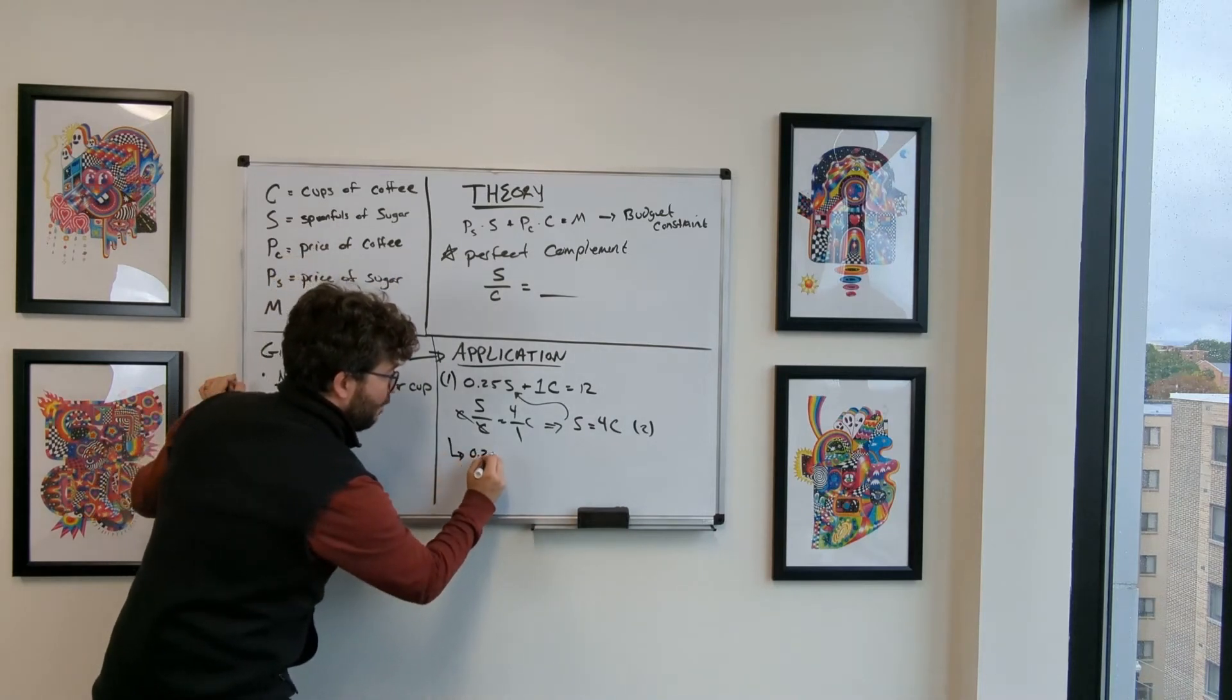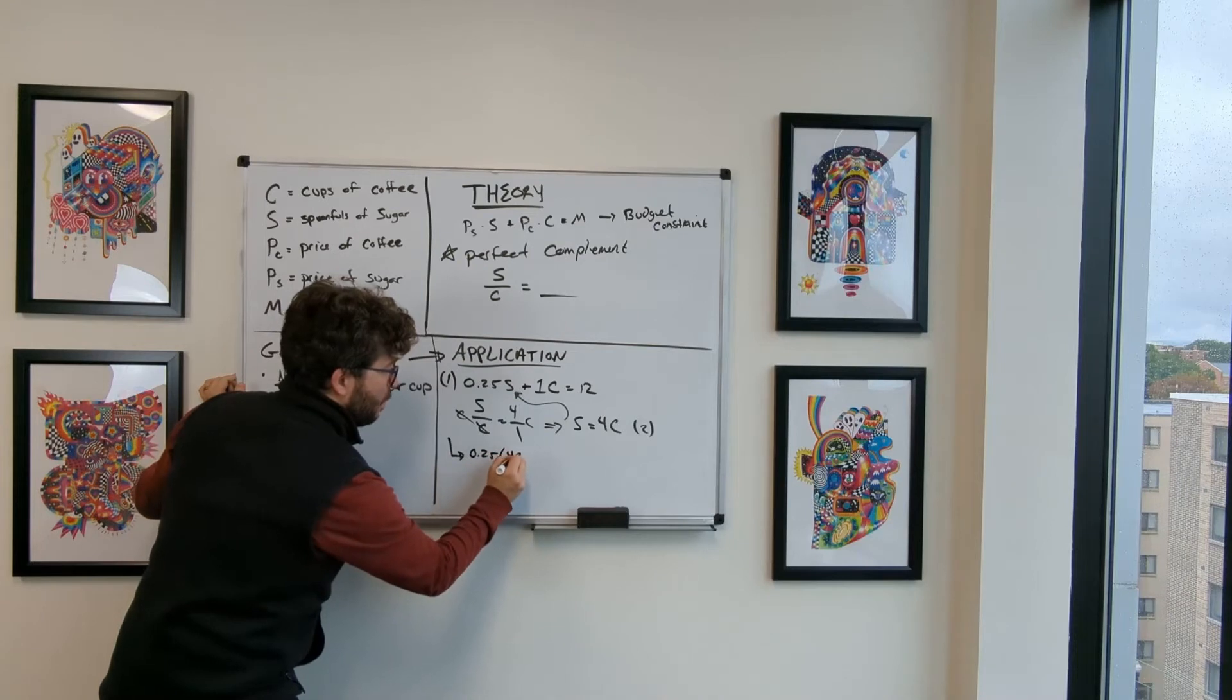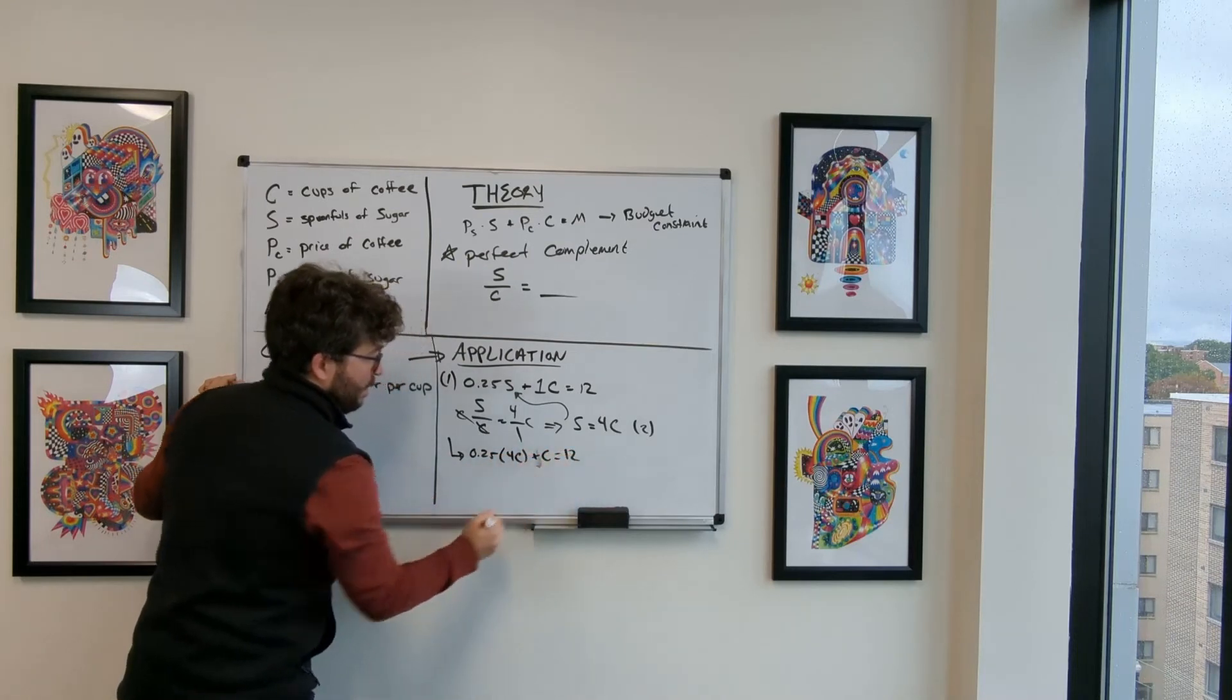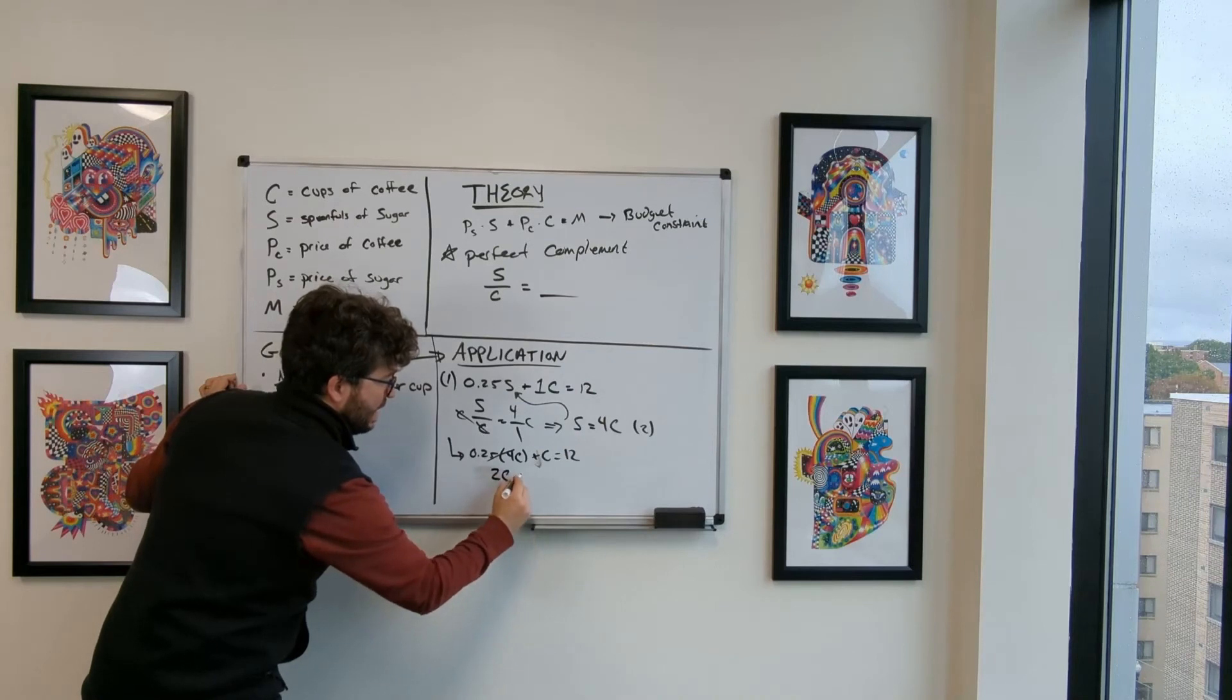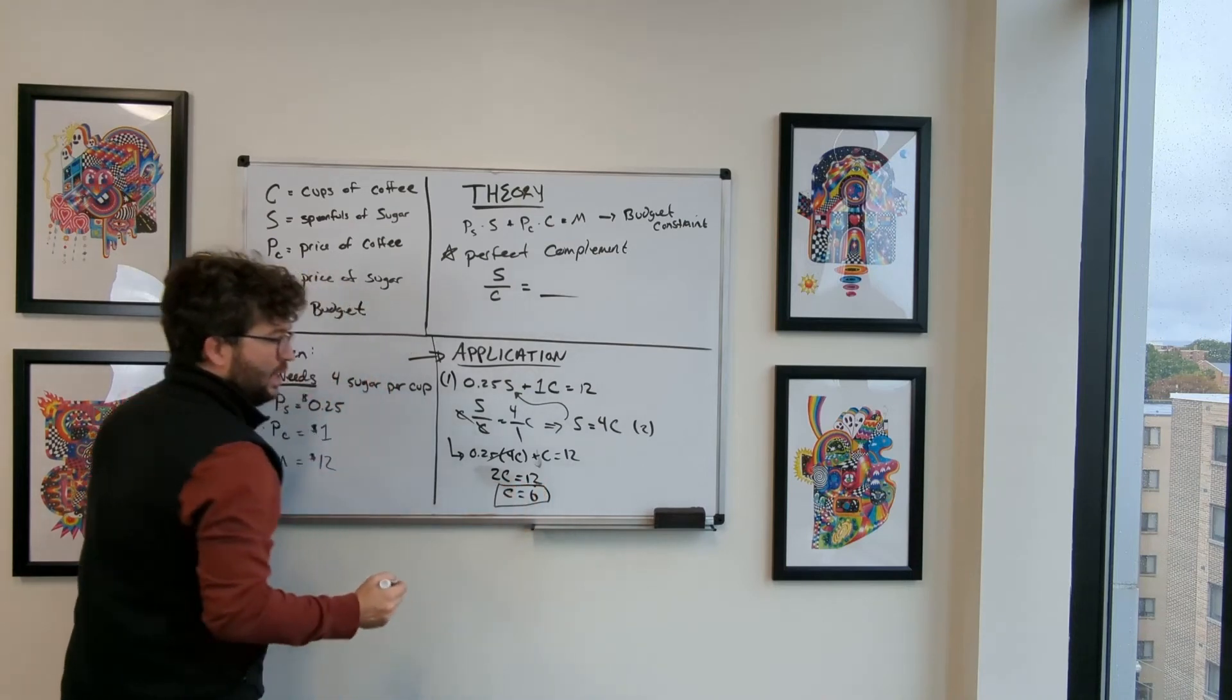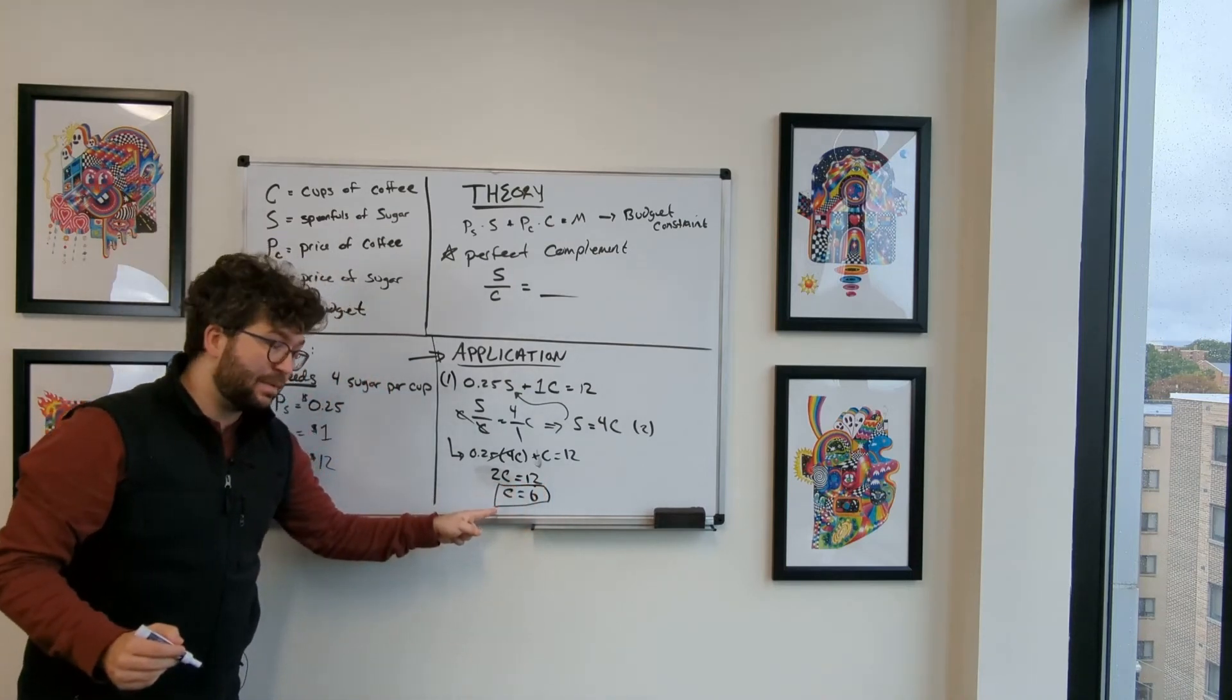Well, we get 0.25 times 4C plus C equals 12. We're going to have 2C equaling 12 or C equaling six. So we know that we're going to be consuming six cups of coffee.